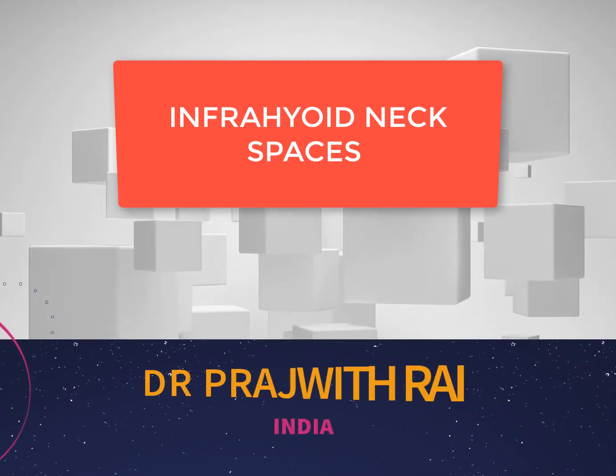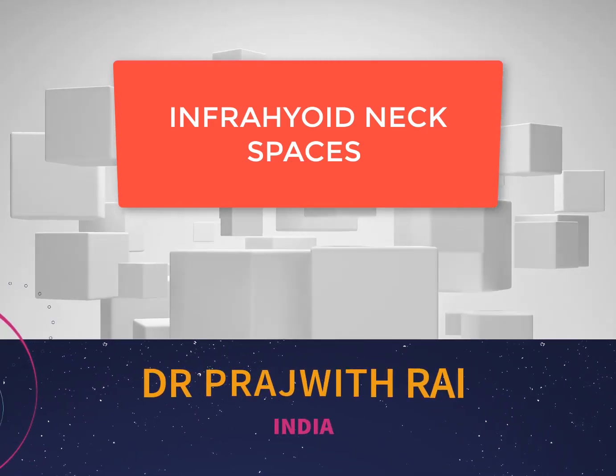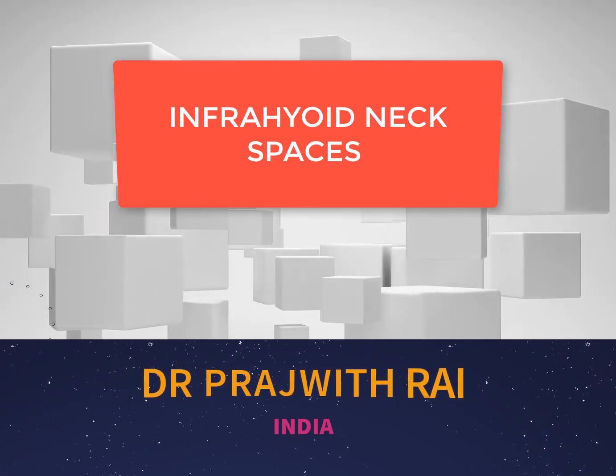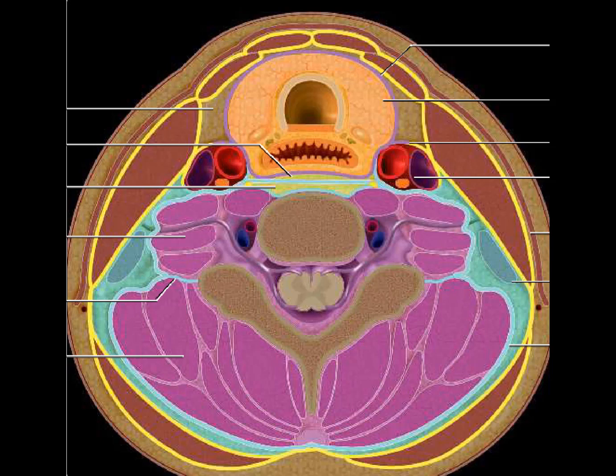The hyoid bone divides the neck spaces into the suprahyoid neck space and the infrahyoid neck space. We have seen how the suprahyoid neck space is divided; now we'll see how the infrahyoid neck space is divided. The deep cervical fascia is responsible for the division of both the infrahyoid and suprahyoid neck spaces.